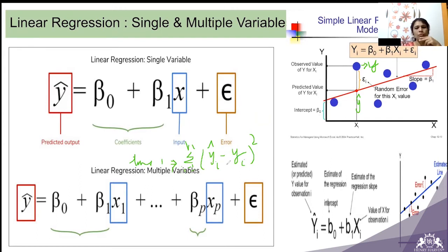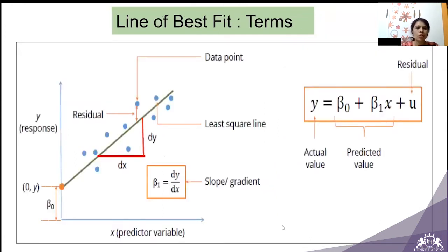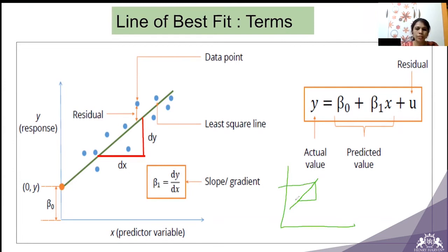The additional point here is about univariate linear regression versus multivariate linear regression. Univariate linear regression means there is only one independent variable. If there are multiple independent variables, then it is multivariate linear regression. We know how the slope m is being calculated — dy by dx — and c is where the line intersects the y-axis.